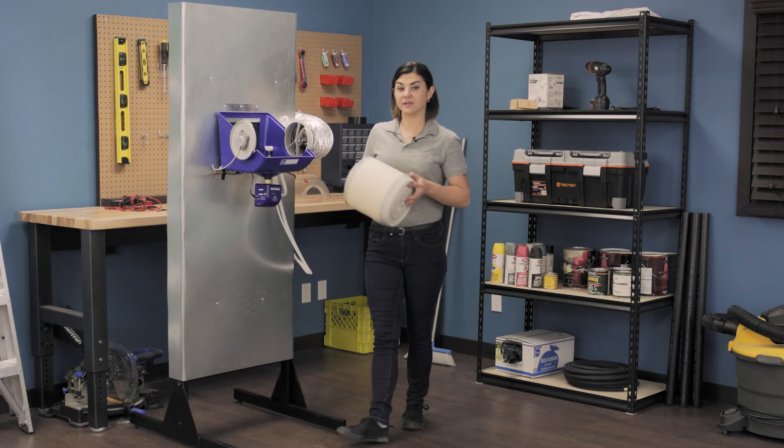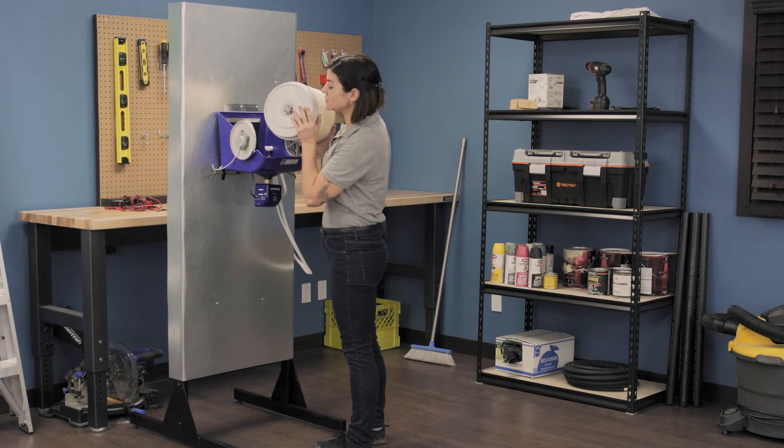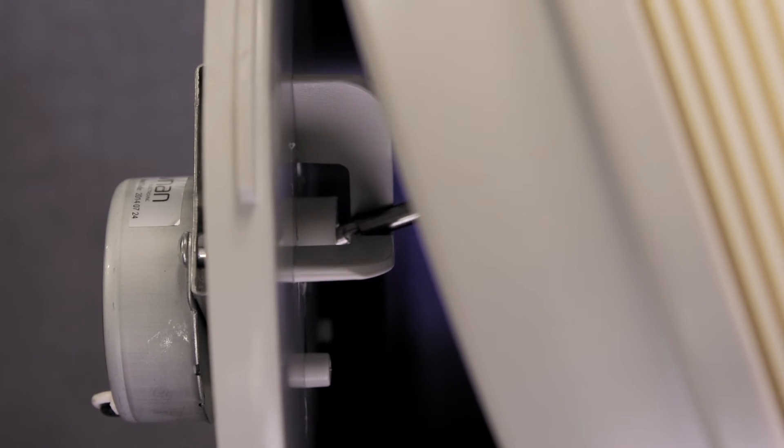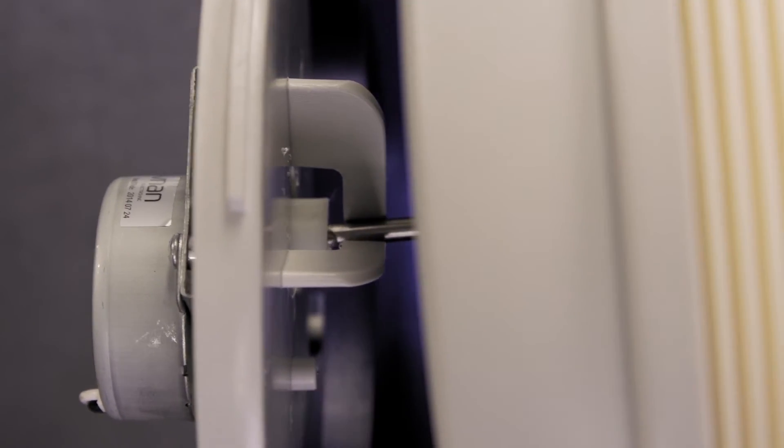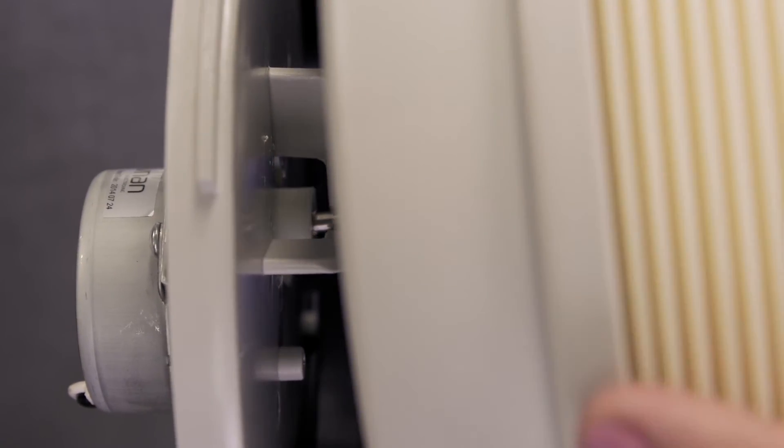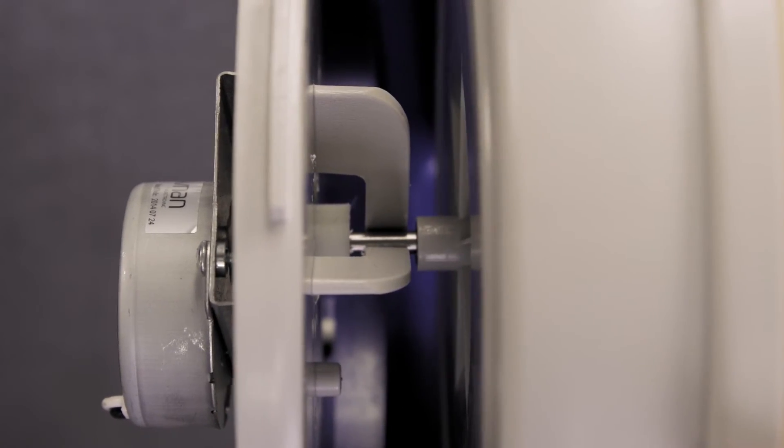Insert the disc wheel into the housing, starting with the closed side. Angle the drive shaft into the motor coupling first and then rotate the disc wheel assembly to ensure the flange is fully inserted into the keyhole.